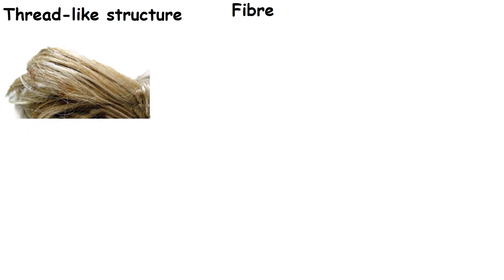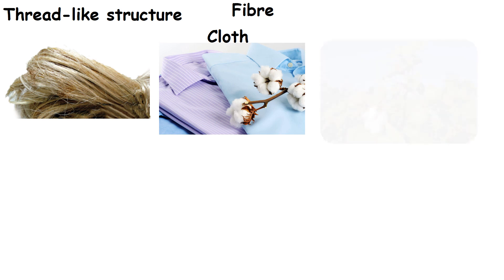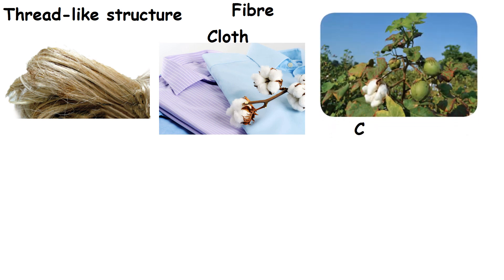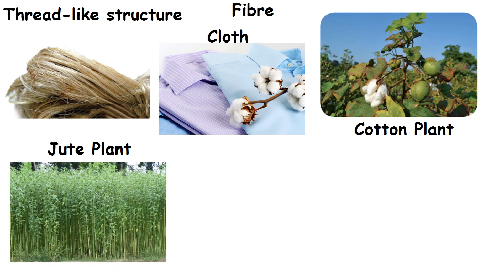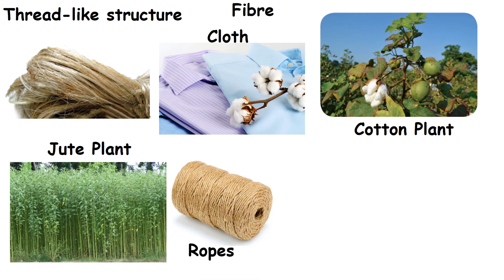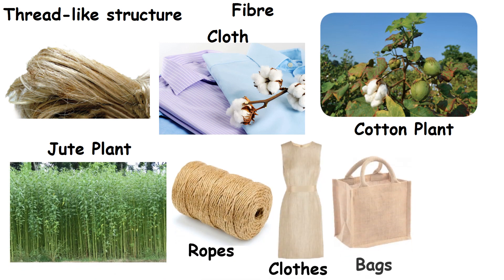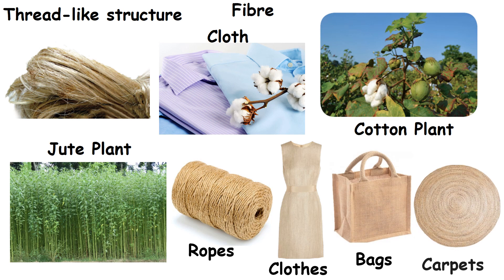We can make fiber from plants. The thread-like structure taken from a plant is called a fiber. Clothes are made from cotton fiber from cotton plants. Fibers from the jute plant are used for making ropes, clothes, bags, carpets, etc.